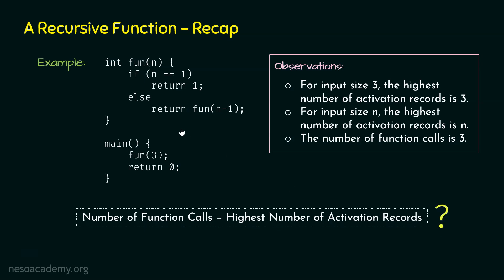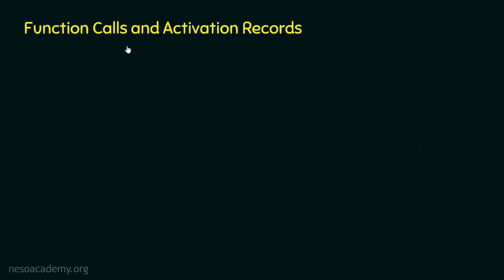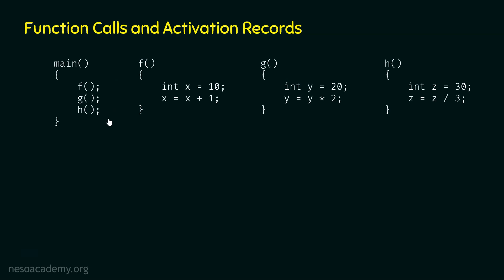We took just one example. What about other functions — including non-recursive functions? Let's try to understand the relationship between function calls and activation records through a simple example. In this example, we can observe that within the main function, we are calling three functions: f, g, and h.